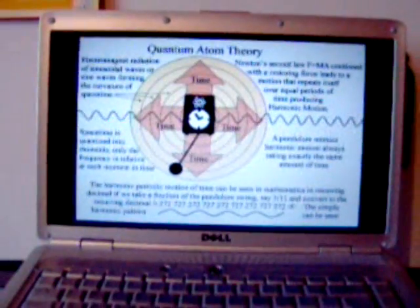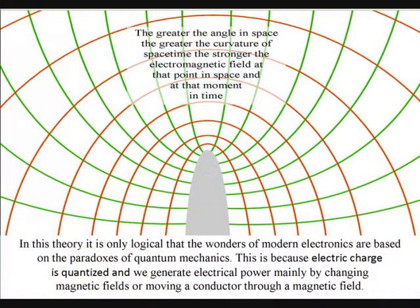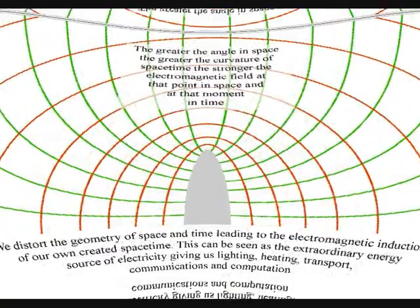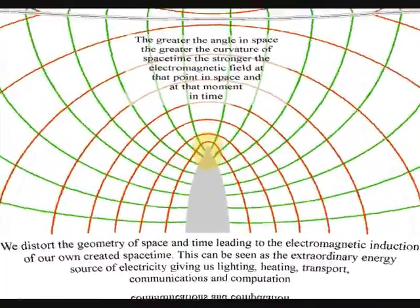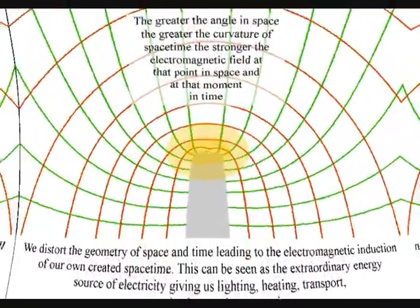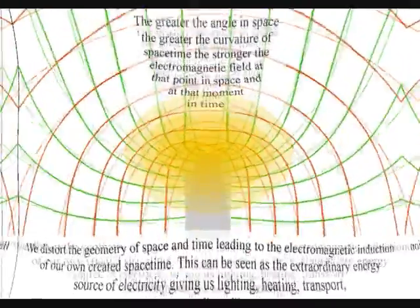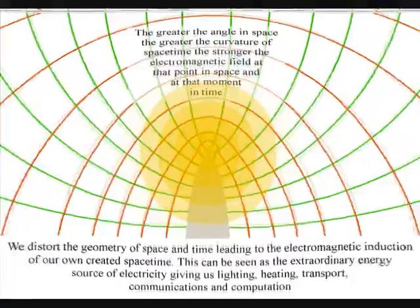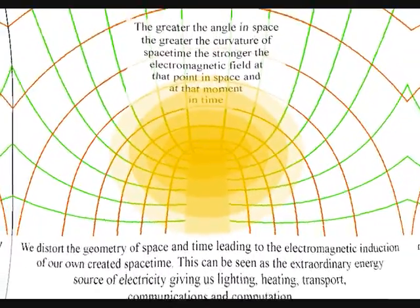In this theory it is only logical that the wonders of modern electronics are based on the paradoxes of quantum mechanics. This is because the electric charge is quantized, and we generate electrical power mainly by changing magnetic fields, or moving a conductor through a magnetic field. This will distort the geometry of space and time, leading to the electromagnetic induction of our own created spacetime, in other words, electricity.